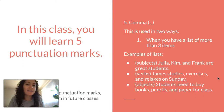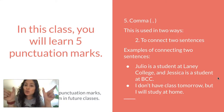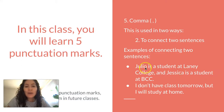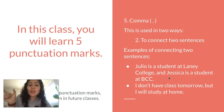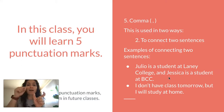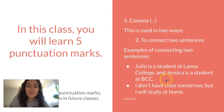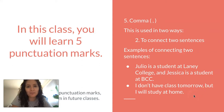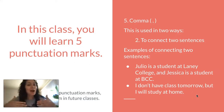The second way we use the comma is to connect two complete sentences, usually with a conjunction like 'and,' 'but,' or 'so.' For example: "Julio is a student at Laney College, and Jessica is a student at BCC." Both parts are complete sentences connected with a comma and 'and.' Another example: "I don't have class tomorrow, but I will study at home." When I use the comma, I take a pause — it helps me breathe so I can continue to speak.